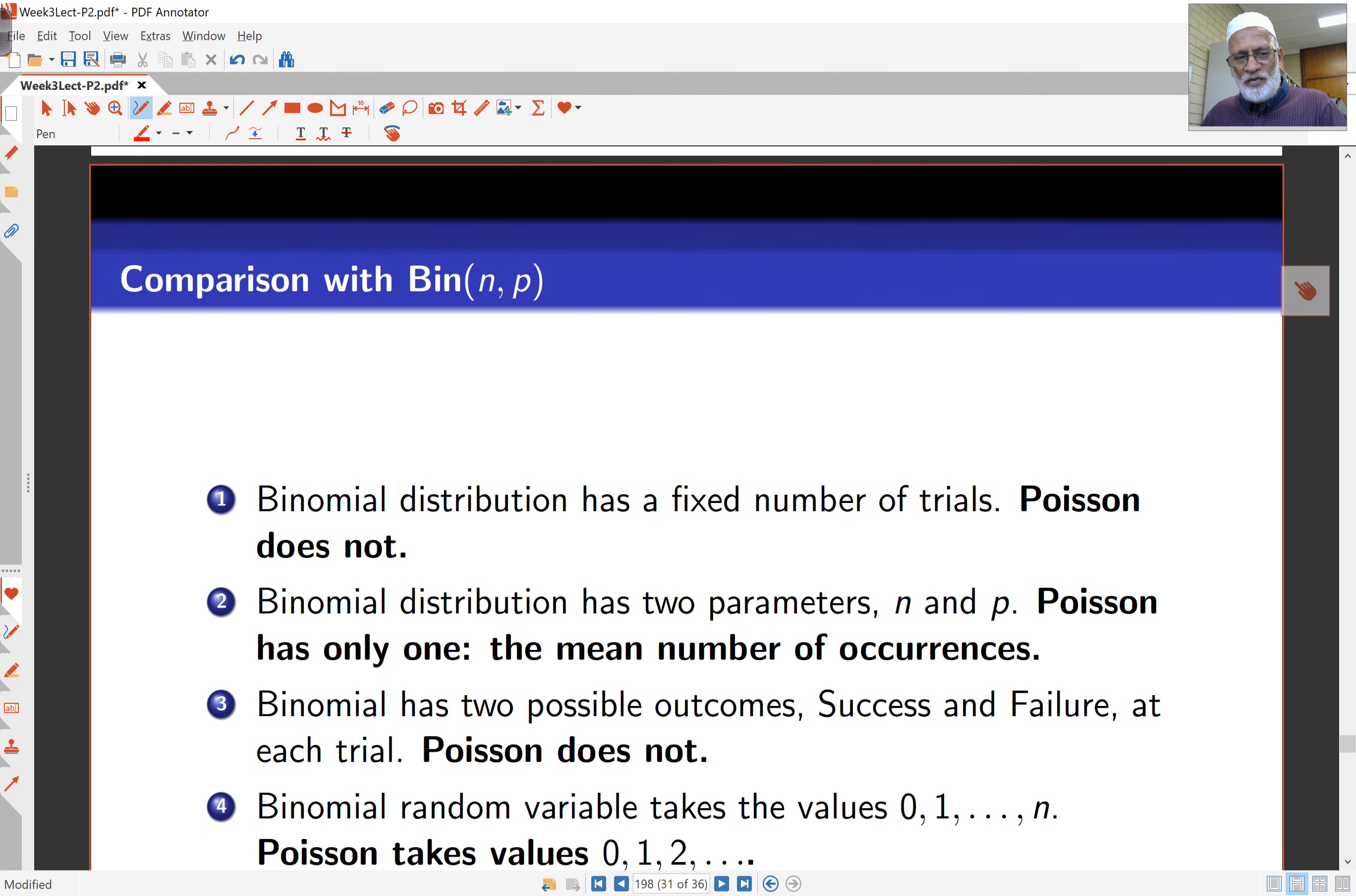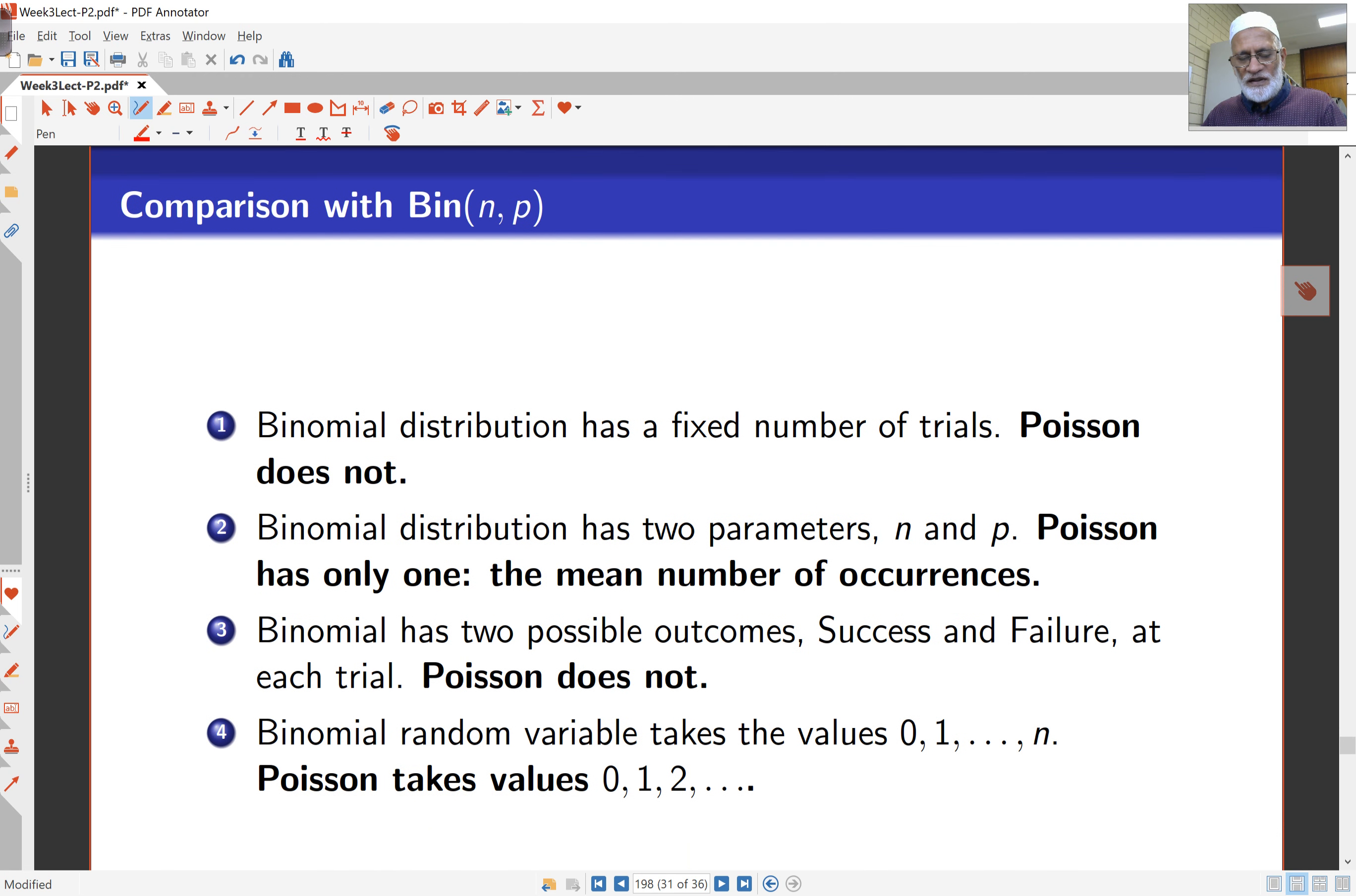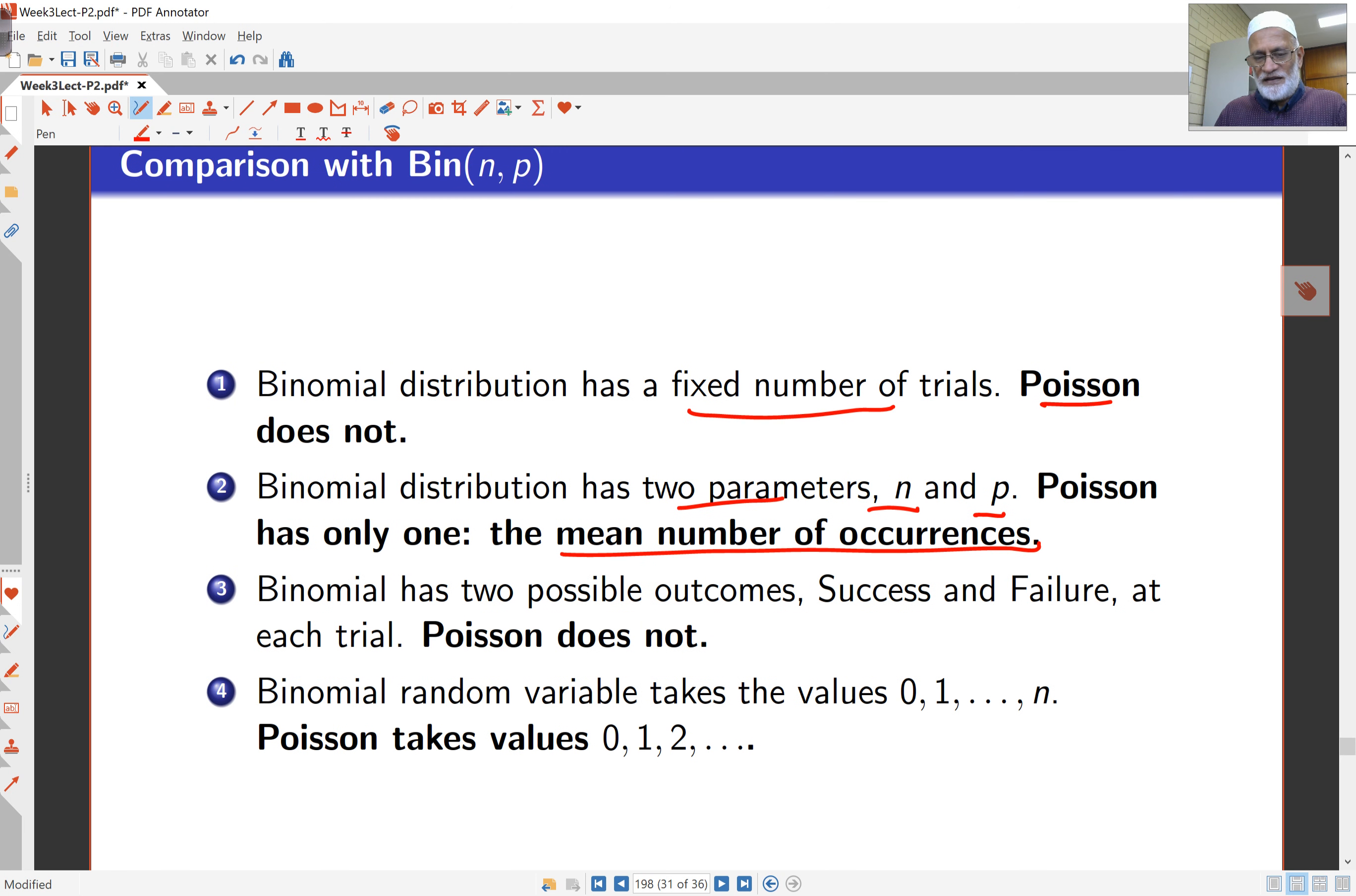So with binomial and Poisson, they look similar but they're different. Binomial has a fixed number of trials, Poisson doesn't. Binomial has two parameters, number of trials and probability of success, Poisson doesn't. All Poisson has is the mean number of occurrences in the volume. Binomial has two outcomes, success or failure, Poisson doesn't. Binomial takes values 0 to n, Poisson takes values 0, 1, 2, 3, all the way to infinity, as long as you can go.